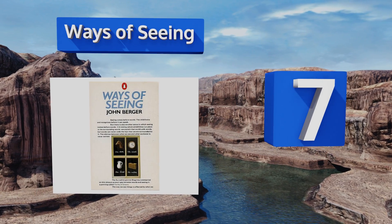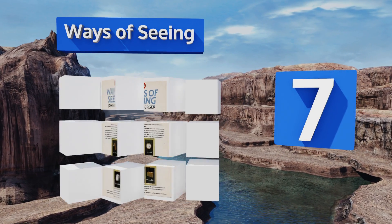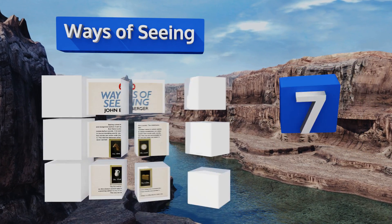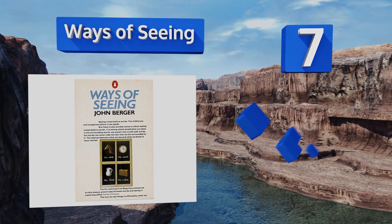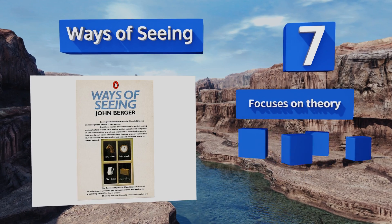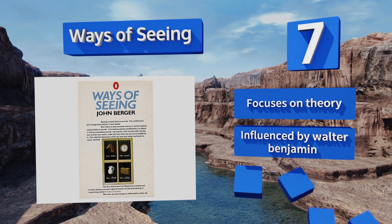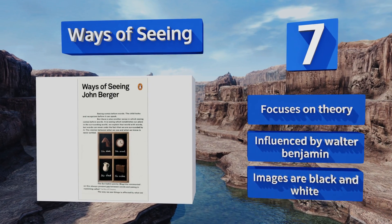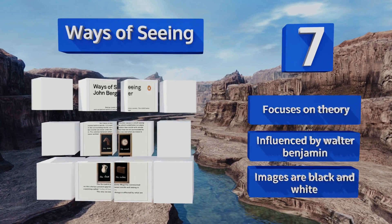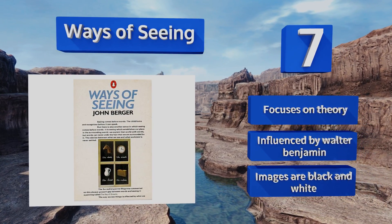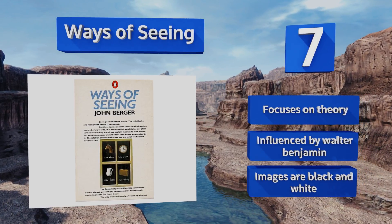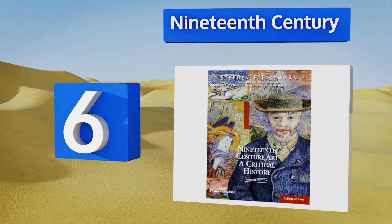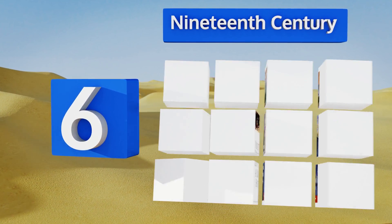At number seven, based on a BBC TV show of the same name, Ways of Seeing is an essential volume for any student of aesthetics. John Berger introduces relatively complex ideas and critiques of how western culture views media in a fluid, accessible way, including one purely visual essay. This one focuses on theory and was influenced by Walter Benjamin, but the images are black and white.